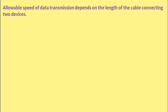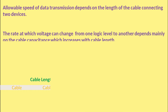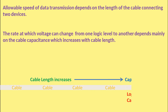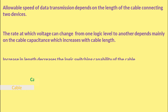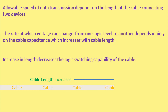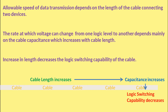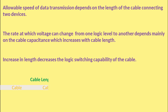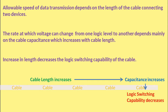There is a relationship between the allowable speed of data transmission and the length of the cable connecting two RS-232 devices. The rate at which voltage can change from one logic level to another depends mainly on cable capacitance, and cable capacitance increases with cable length. Thus, with increase in cable length, the switching speed decreases, which may result in data loss or errors. The cable length is limited by the number of acceptable data errors during transmission.